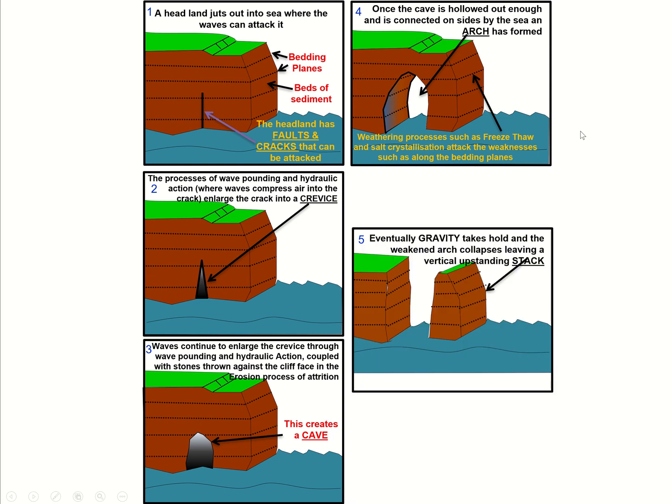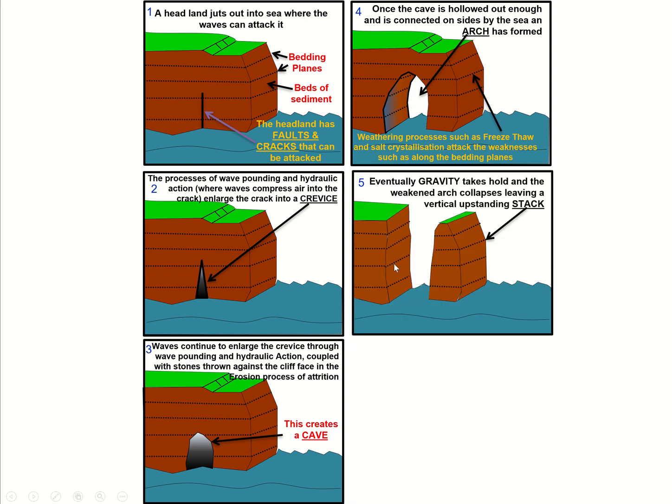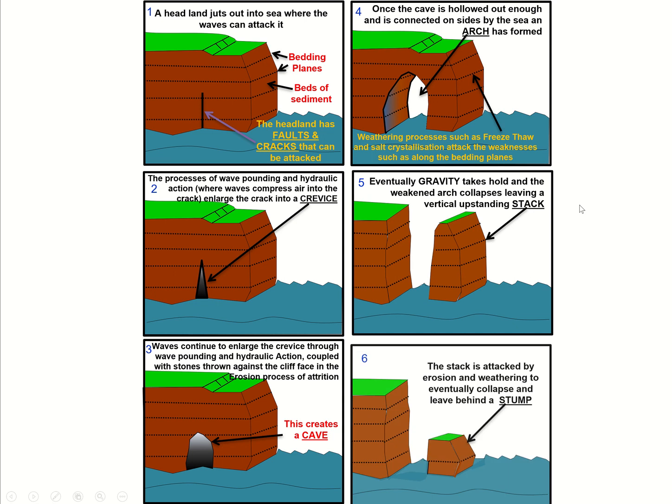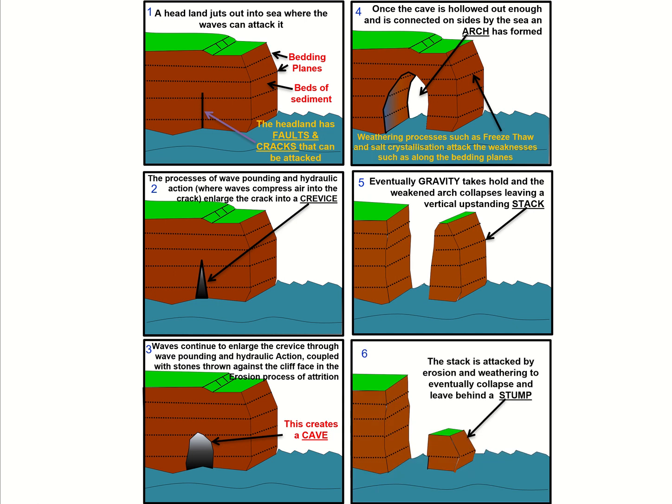Once the arch is weakened to a certain point, gravity will take hold and the arch would collapse, leaving a vertical upstanding stack. Over time that might be eroded further by weathering and erosion processes to create a stump. Don't forget this sequence is very clear with clear steps, and I've mentioned processes right the way through. That's what you need to know for your GCSE.